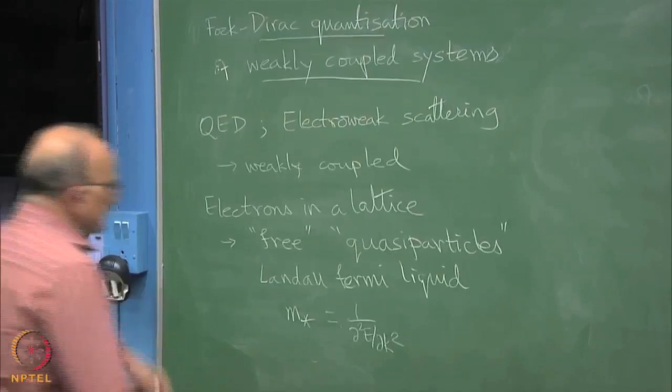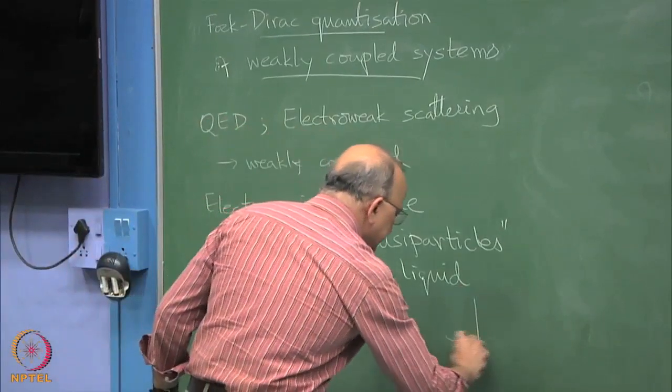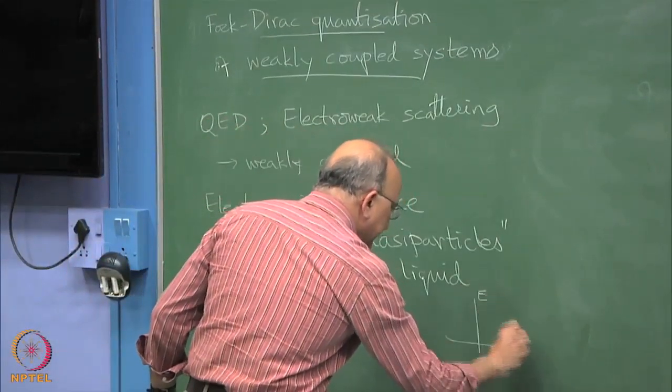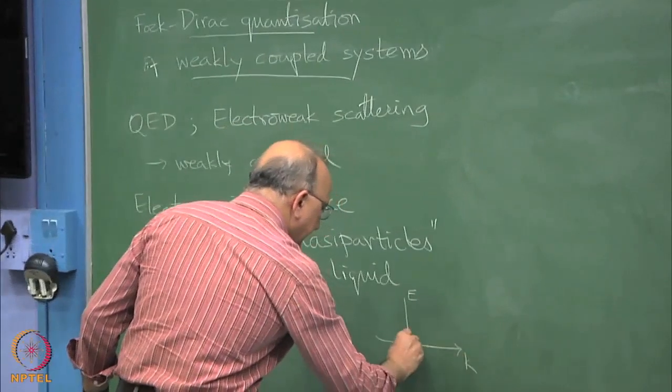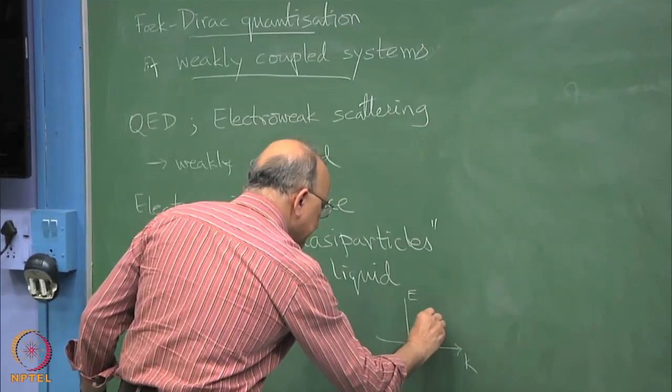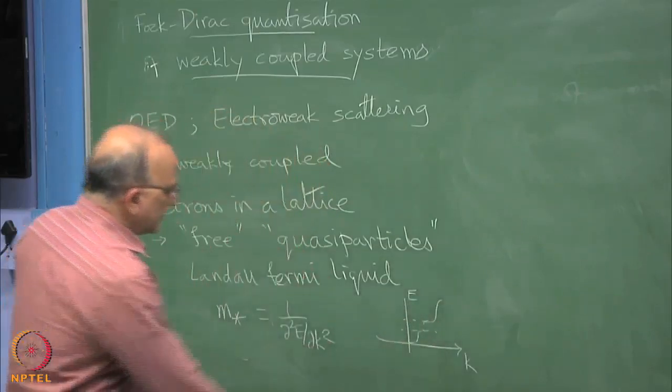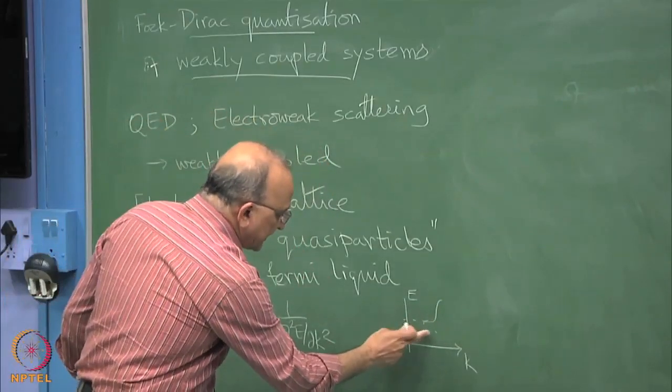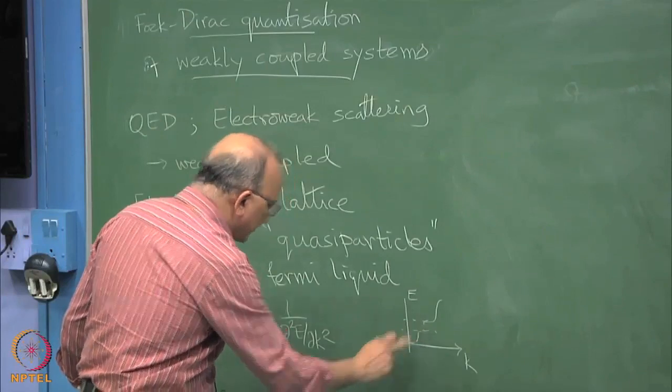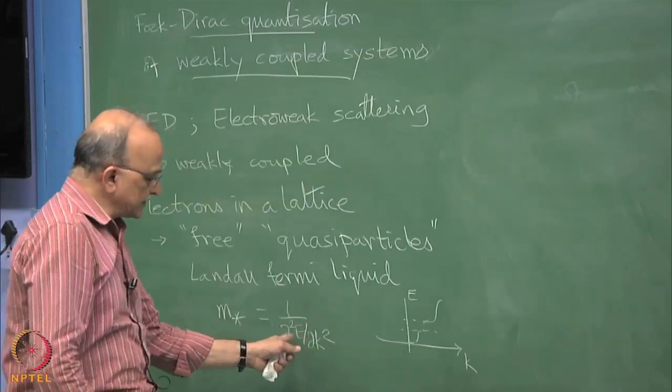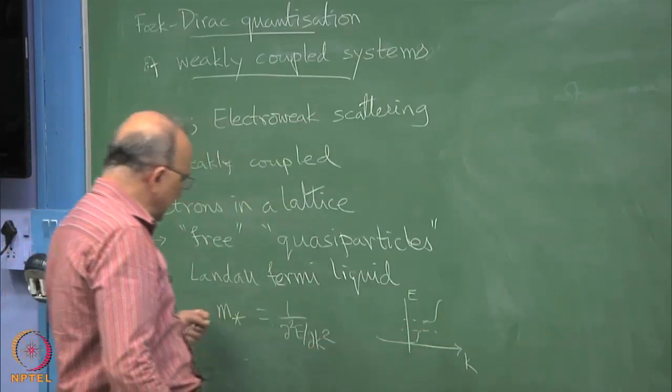You define it like this and you know that the dispersion relation energy as a function of K has this band structure with gaps and when you reach here you have very large mass because the curvature becomes 0. So as the curvature of dE by dK curve becomes 0, the mass becomes infinite.